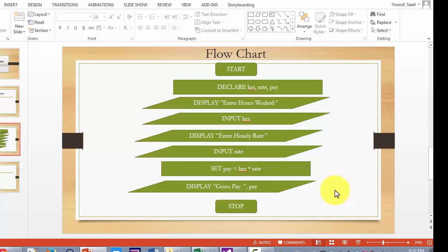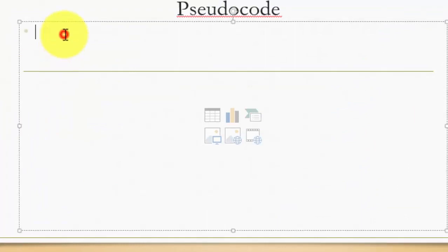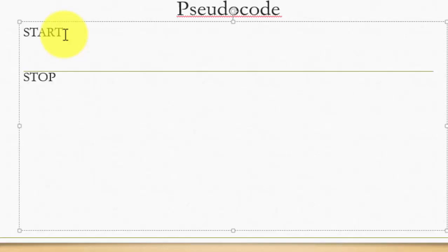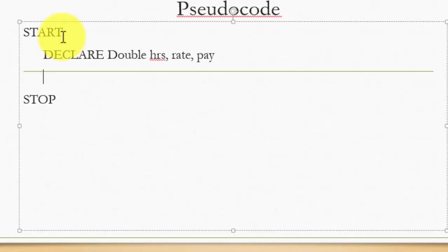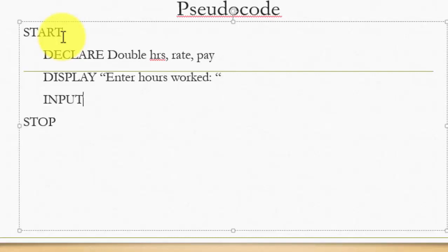Now the same logic goes into my pseudocode. In pseudocode we are going to have start and stop, with everything else in between. I need to declare three sets of variables. One extra thing I need to consider is I am now declaring my variables with data types. So I have gross pay which is pay, hourly rate, and hours. I am going to use type double so that I can also accept decimal numbers. So I have declaring a double data type for hours, rate, and pay. The next thing I am doing is writing my input statements alongside my prompt — display 'enter hours worked' and then input hours.